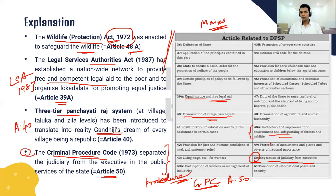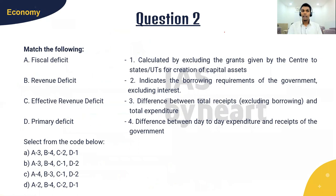DPSP is an important aspect — I want all of you to memorize all the articles under DPSP, as these can also be used in your Mains answers to substantiate your points. The next question is from economy, about different types of deficits: fiscal deficit, revenue deficit, effective revenue deficit, and primary deficit. I've asked for the basic definitions — give your answers in the comment box below.